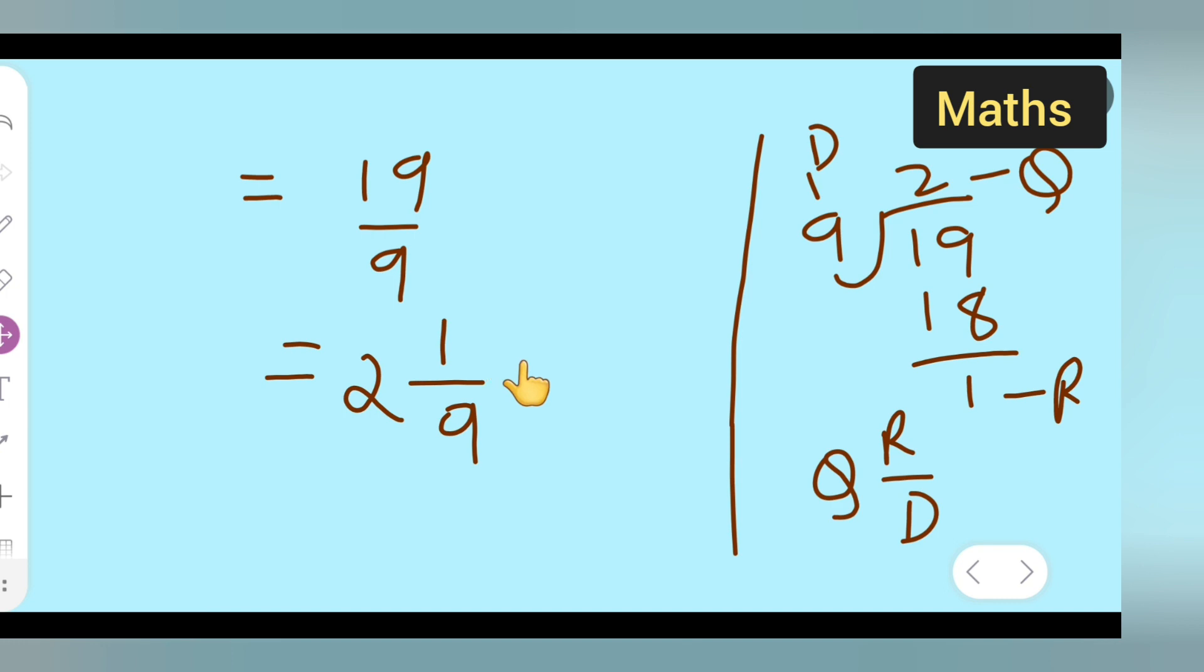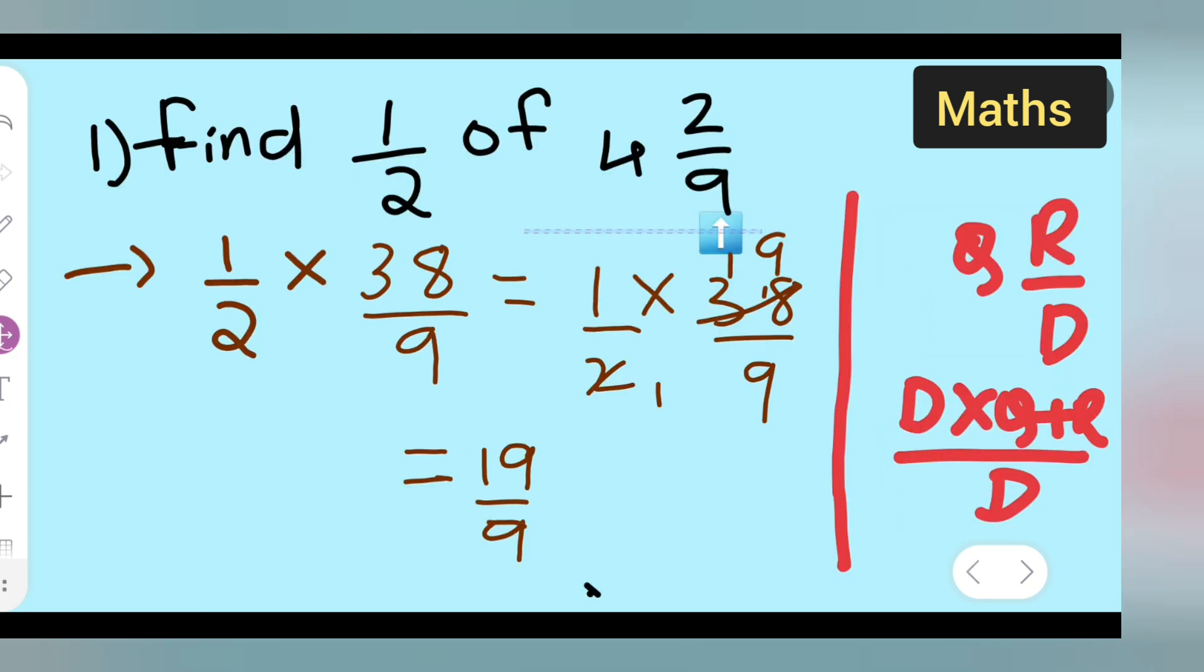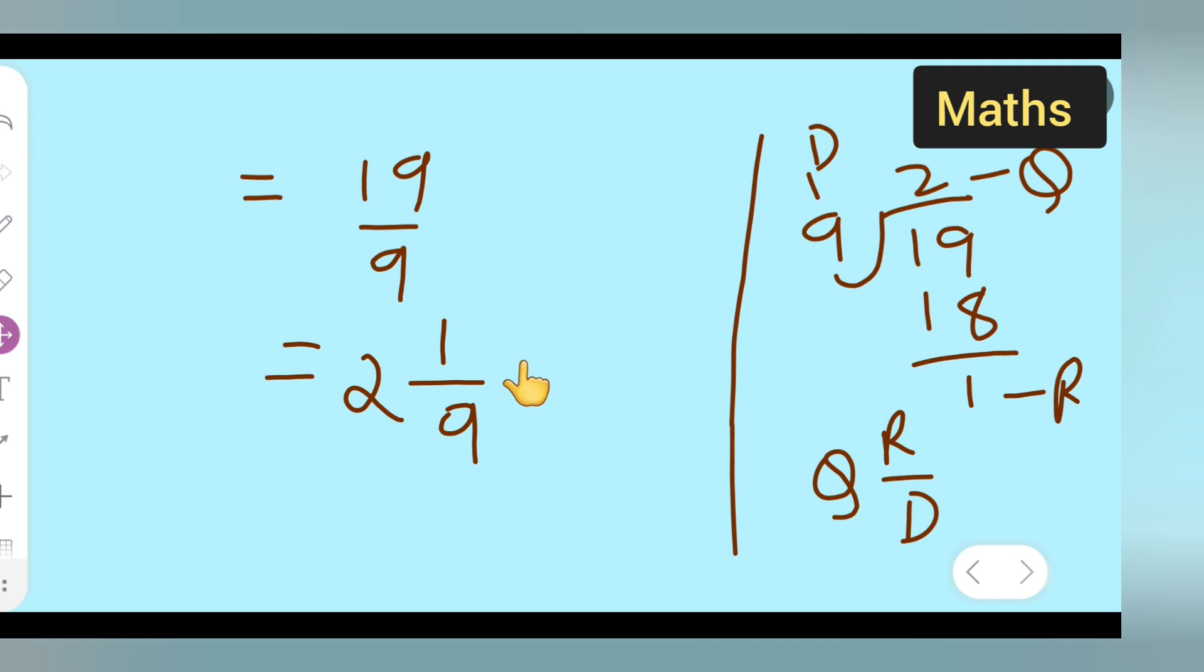So, I hope you all have understood how to find this given. 1 upon 2 of 4 is to 2 upon 9. And thanks for watching. If you all have any doubts, queries, you all can comment below. Don't forget to like, subscribe my channel and share with your friends. Press the bell icon for more updates.